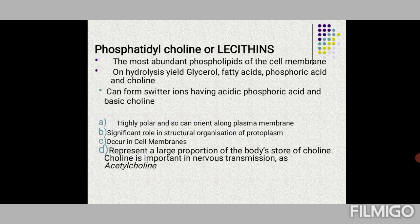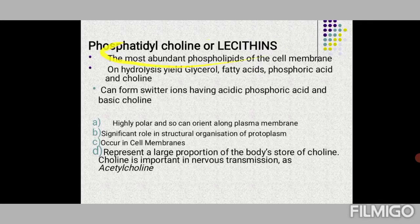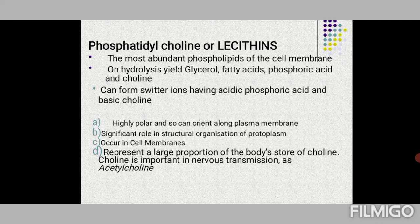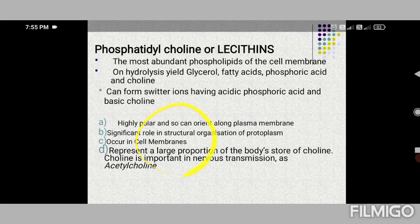First, phosphatidylcholine, also called lecithin, is the most abundant phospholipid of the cell membrane. On hydrolysis it yields glycerol, fatty acids, and phosphatidylcholine. It can form zwitterions, having acidic phosphoric acid on one end and basic choline at the other end, so both charges are present in the same molecule.